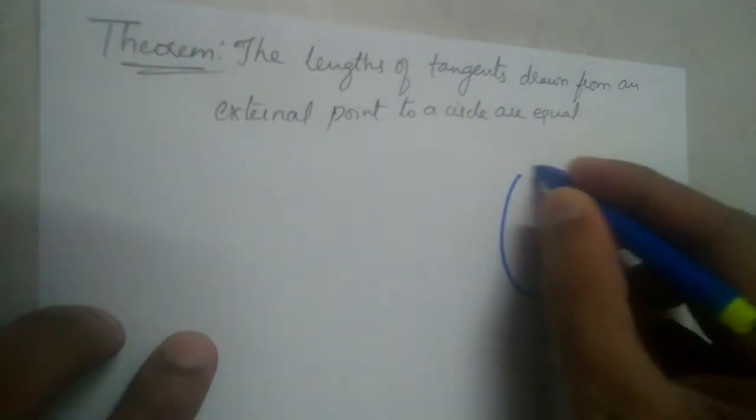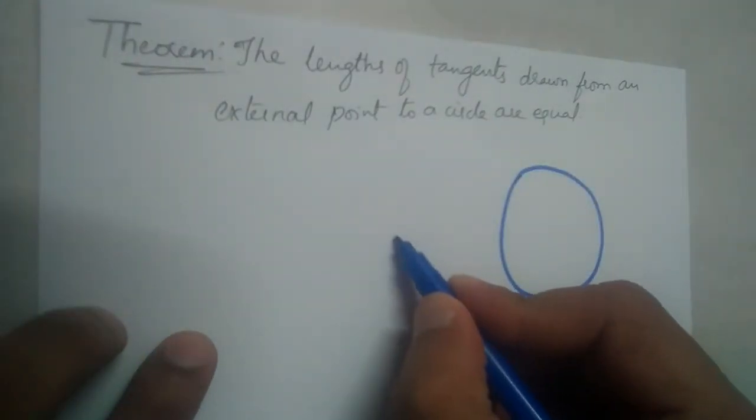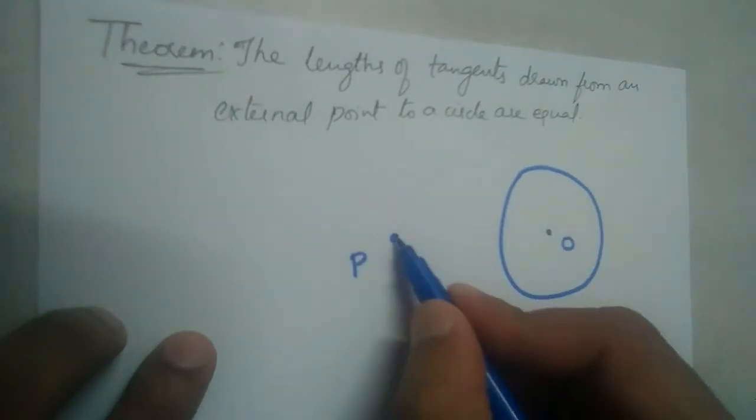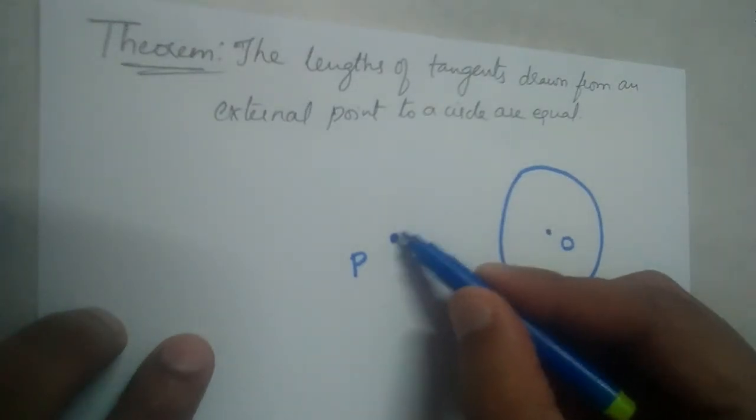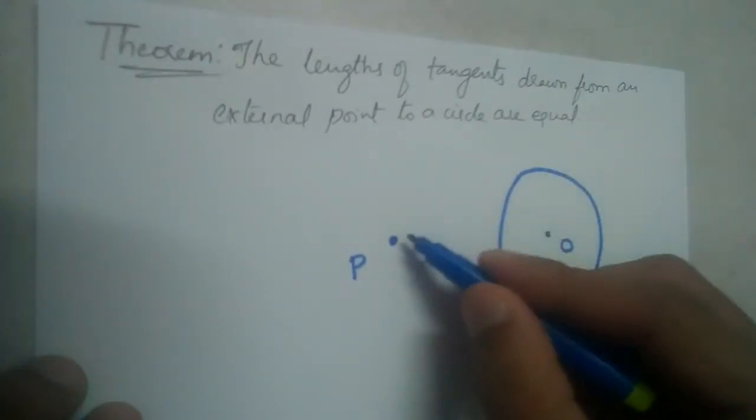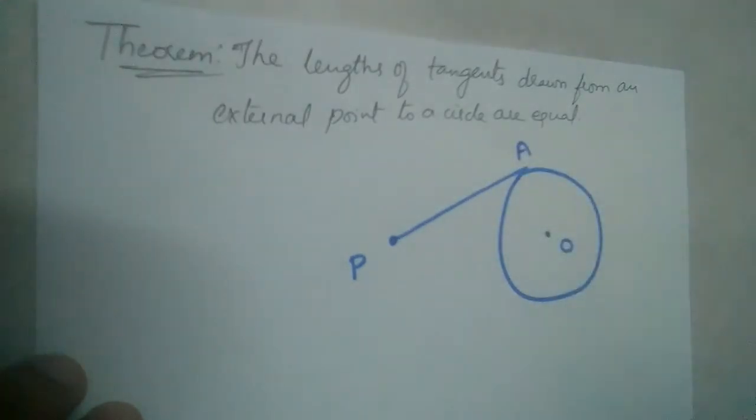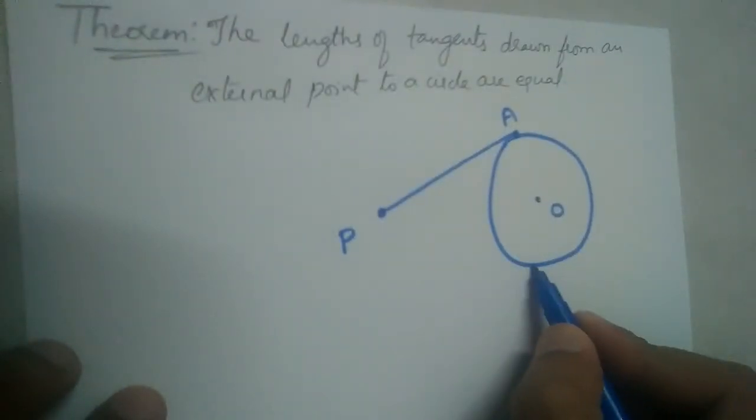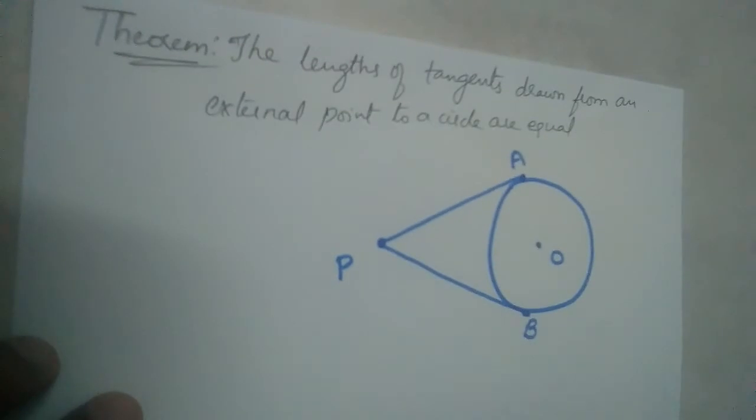So, let us draw a circle. O is the center of the circle. Let P be a point outside the circle. If we draw tangents through point P to the circle, we can draw two tangents right.